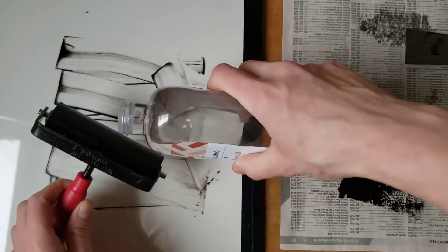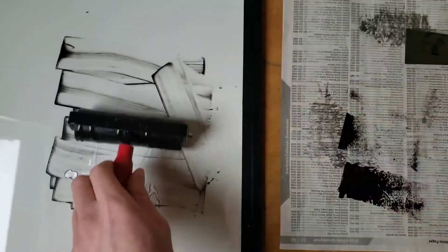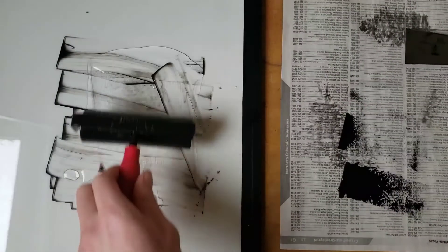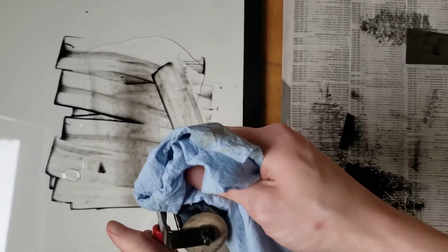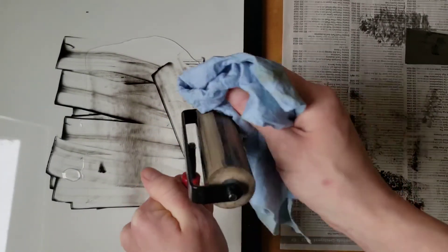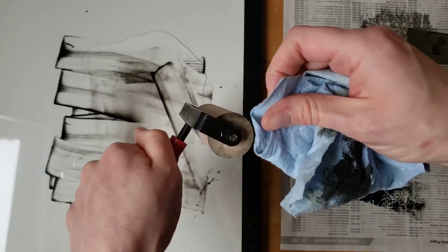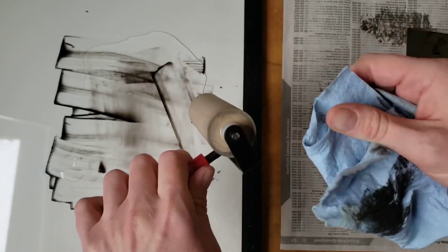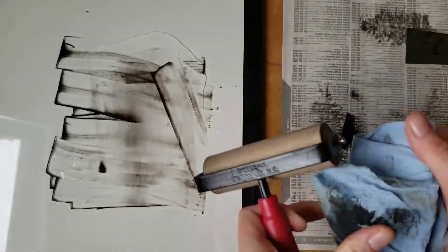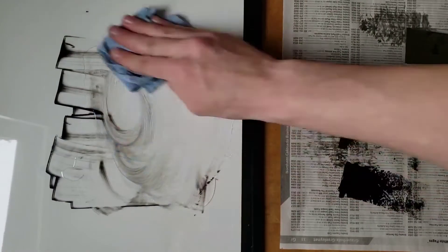Hold the brayer over the inking slab while you pour baby oil on it. Roll the brayer through the oil to coat. Wipe the oil and ink off using a paper towel. Be sure to get the sides of the roller as well. Then wipe up the oil on the slab.